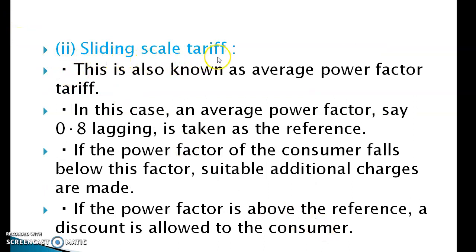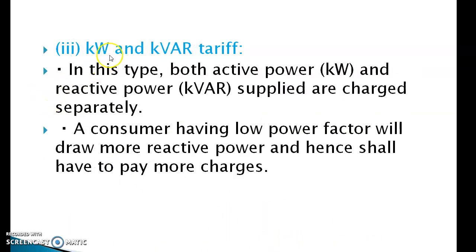Second type of power factor tariff: sliding scale tariff, also known as average power factor tariff. An average power factor, say 0.8 lagging, is taken as reference. If the power factor of the consumer falls below this, suitable additional charges are levied. If the power factor is above the reference, a discount is allowed to the consumer. Third type: kilowatt and KVAR tariff. Both active power in kilowatt and reactive power in KVAR are charged separately. A consumer having low power factor will draw more reactive power and hence shall have to pay more charges.